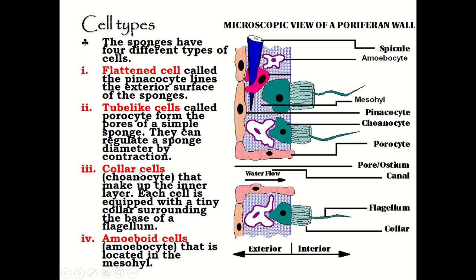The collar cells, also known as choanocytes, make up the inner layer of the sponge. Each cell is equipped with a tiny collar surrounding the base of a flagellum. Last but not least, the amoeboid cells, also known as amoebocytes, are located inside the mesohyl of the sponge.